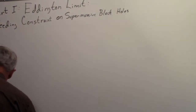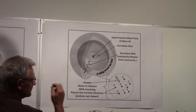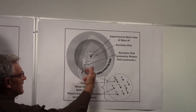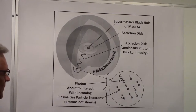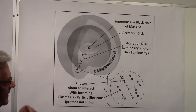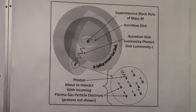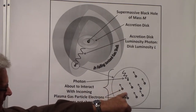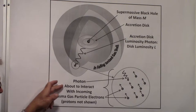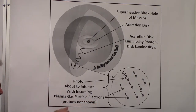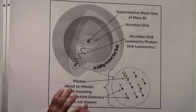The cross section represents an area that the radiation pressure is going to push against. Coming over here to this figure — same as the first one — a photon is coming out from the accretion disk and it's going to interact with particles in the infalling gas shell. I'm showing just the electrons here, and why only electrons will become clear in a bit. This photon is about to interact with the incoming plasma. The protons are not shown, but there's an equal number of protons there.